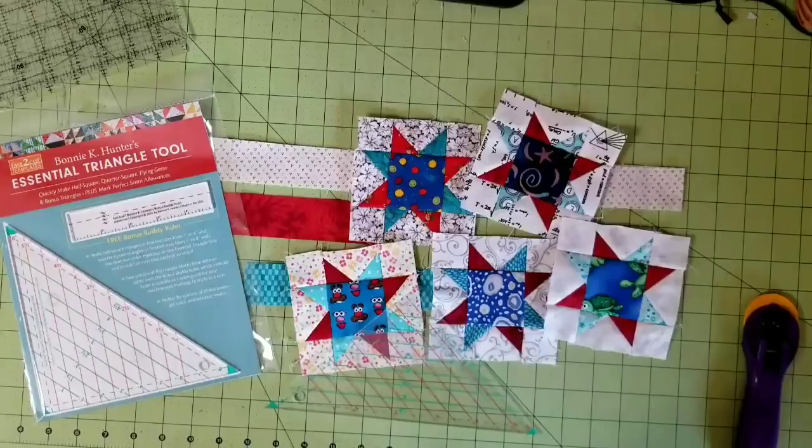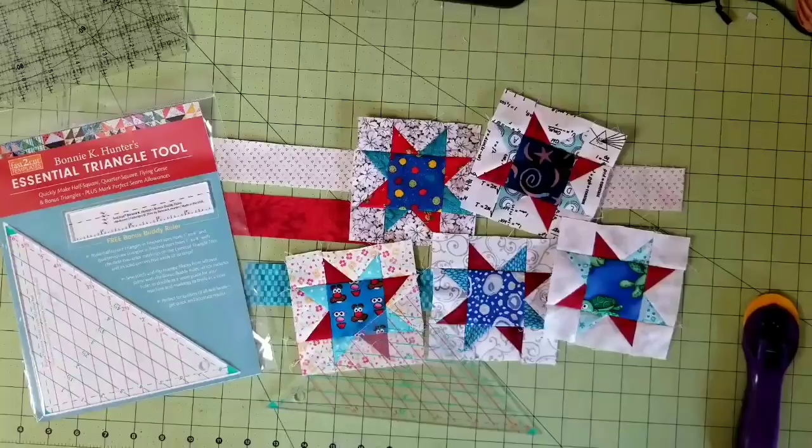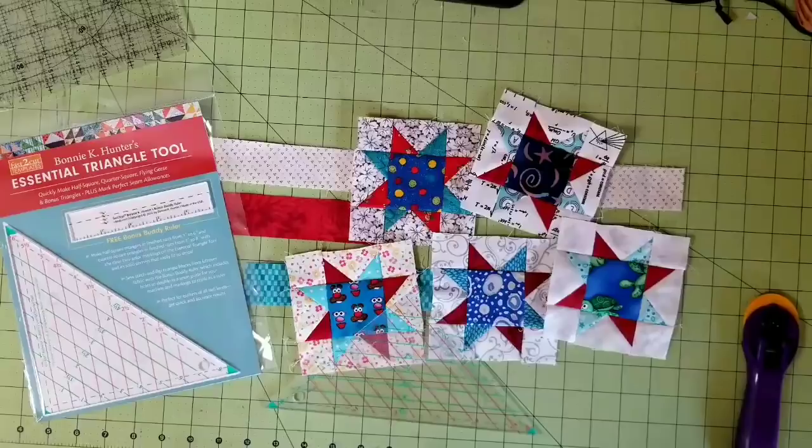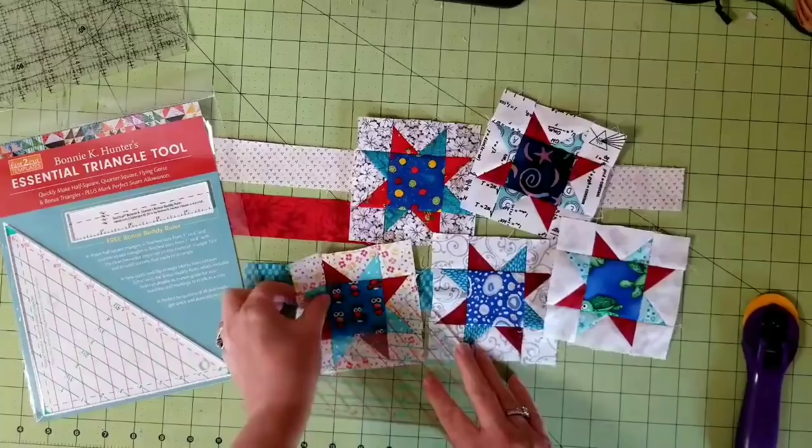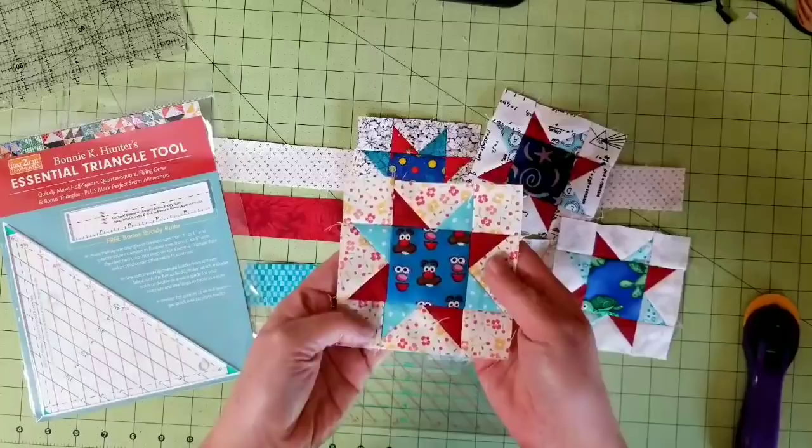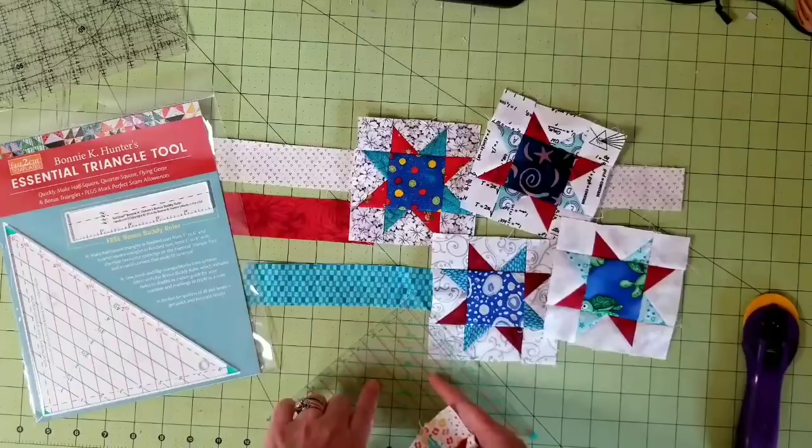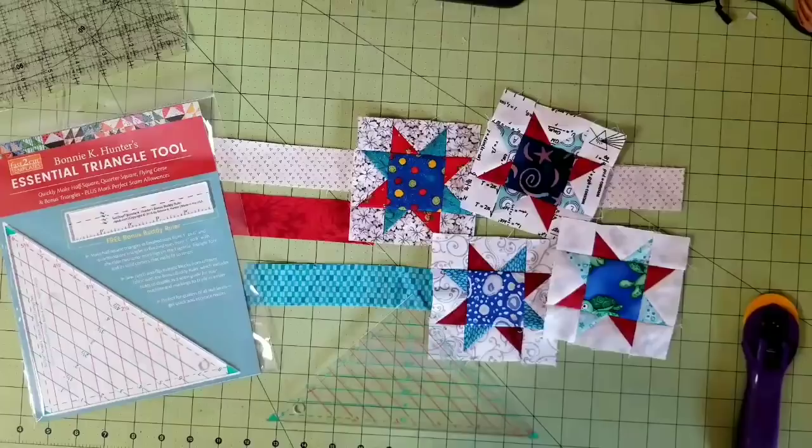Hey everyone, it's Bonnie in Quiltville, and we are on to part three of our Unity Quilt-A-Long during our quilting quarantine weeks while we've been sheltering at home. This week is a favorite of mine. I absolutely adore sawtooth stars, and this is my favorite size. They are four inches finished. You're going to need 36 of them, and I wanted to share with you my essential triangle tool method of cutting the triangles, and then we'll go over to the sewing machine and I will show you how to stitch flying geese the essential triangle tool way.